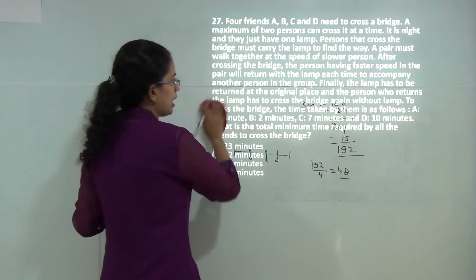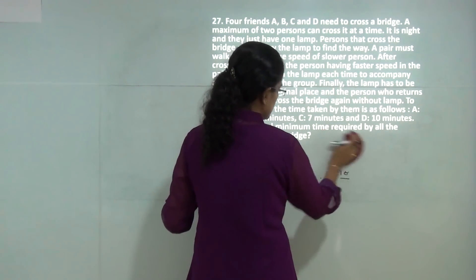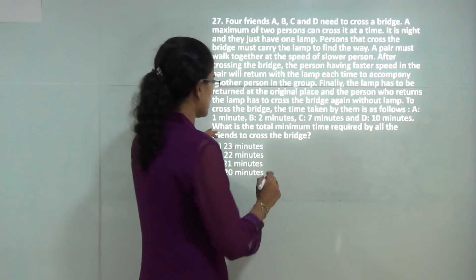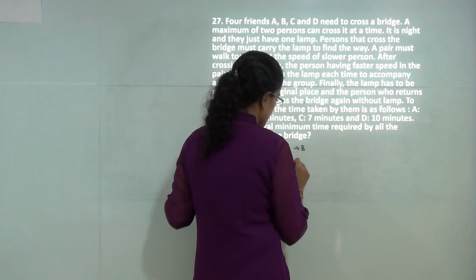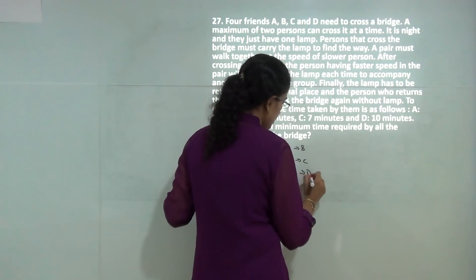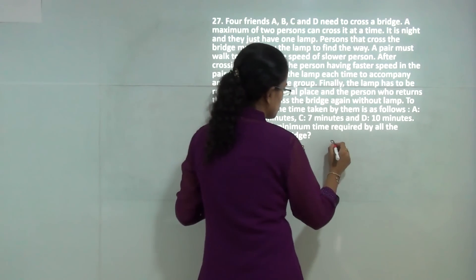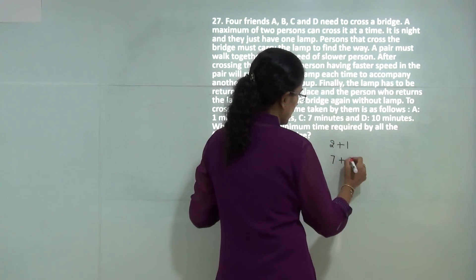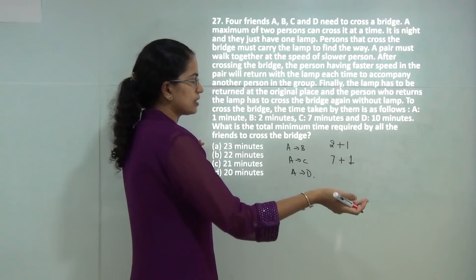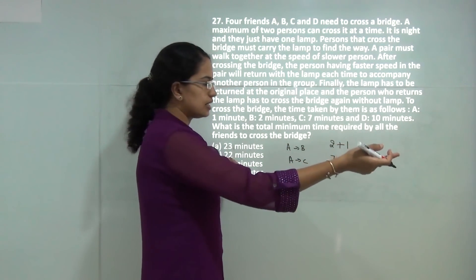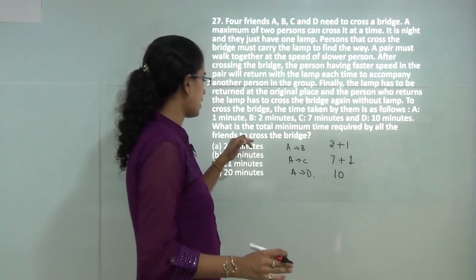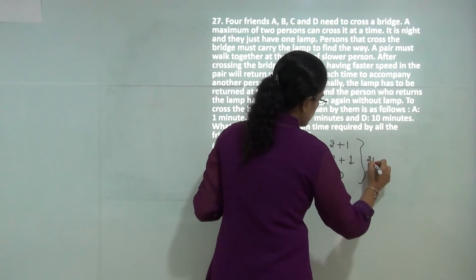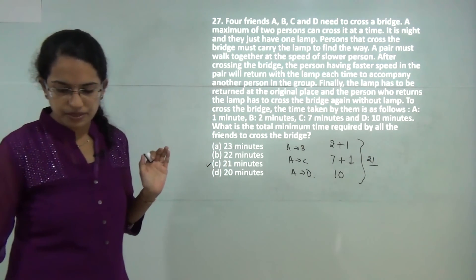The next question asks for the minimum time required to cross the bridge. Since we need the minimum time, we start with A which takes the minimum time of 1 minute. First A goes with B taking 2 minutes, then A returns in 1 minute. A goes with C taking 7 minutes, returns in 1 minute. Then A goes with D in 10 minutes and does not need to return. All friends have crossed the bridge, so the total minimum time would be 21 minutes.